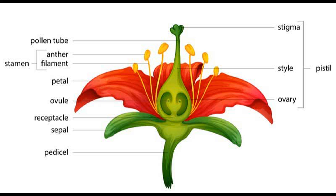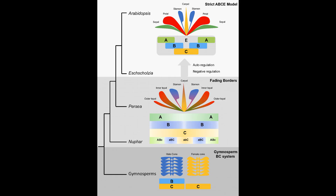The female part, the pistil, contains the stigma, style, and ovary. Pollen must get into the stigma, travel down the style, and enter the ovary to reach an egg. Once fertilization occurs, the ovules become seeds and the ovary matures into a fruit. Interestingly, the same genes that control the development of cones in gymnosperms are also present in angiosperms, but here they are modified to shape and control the development of flowers.